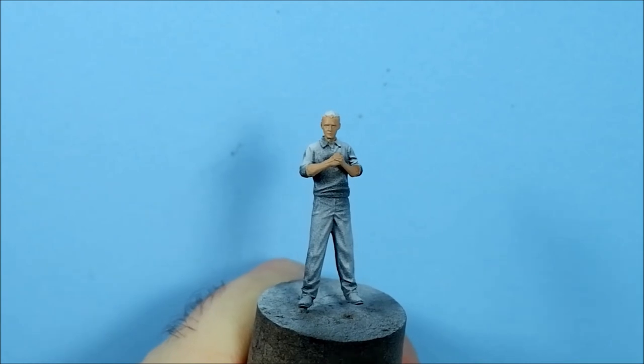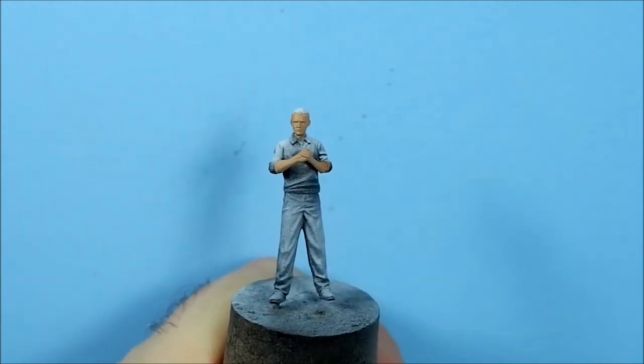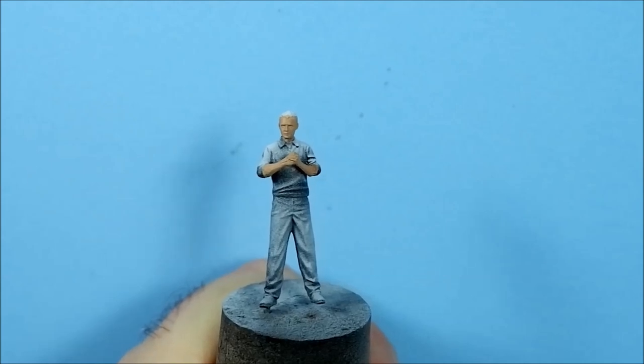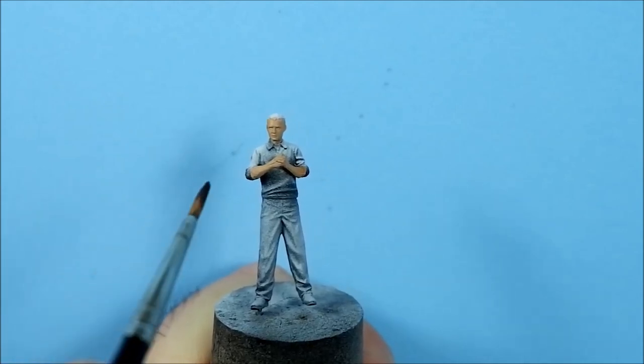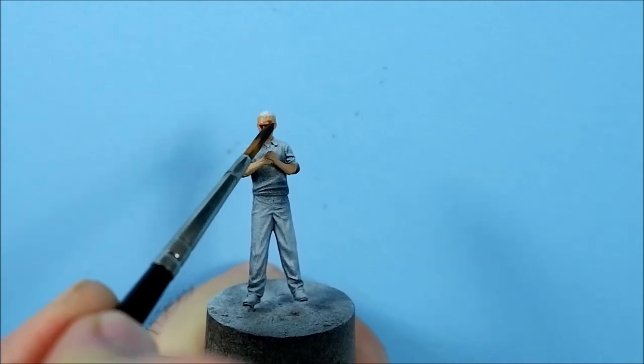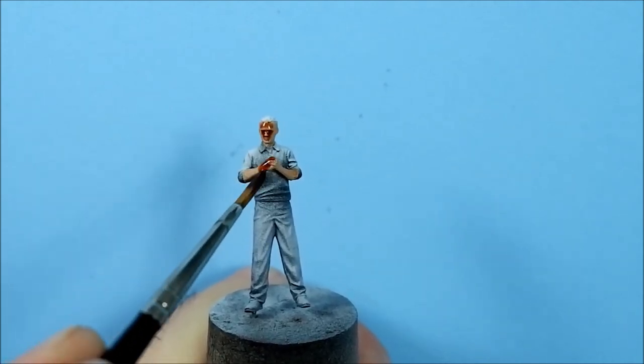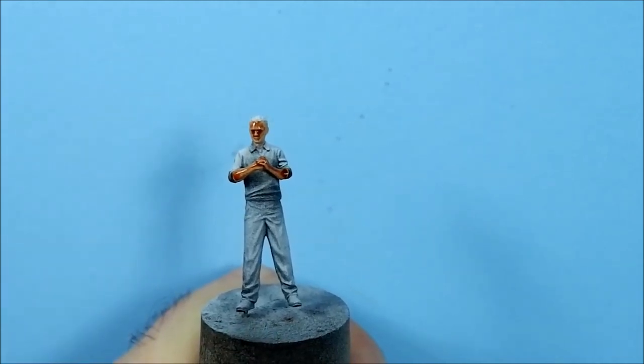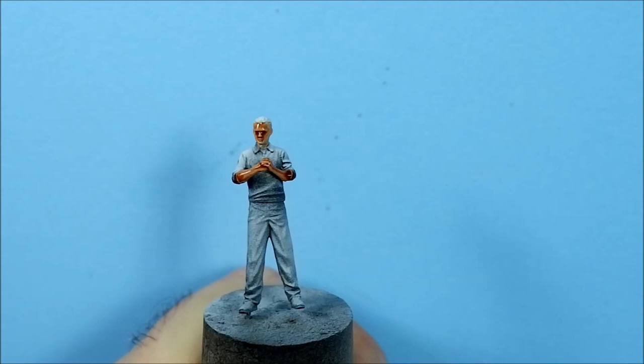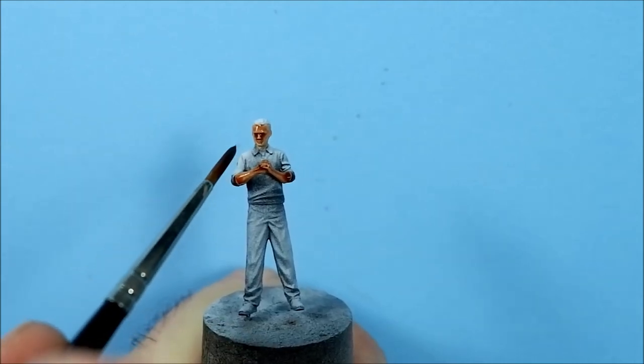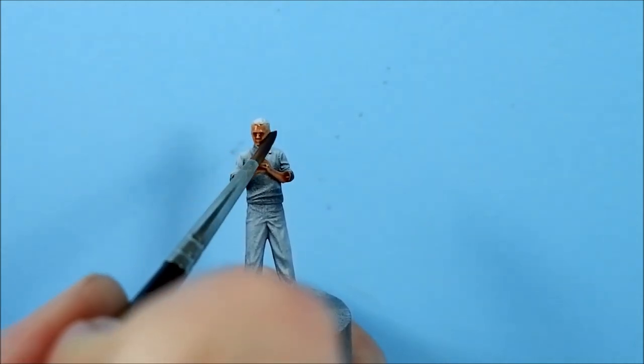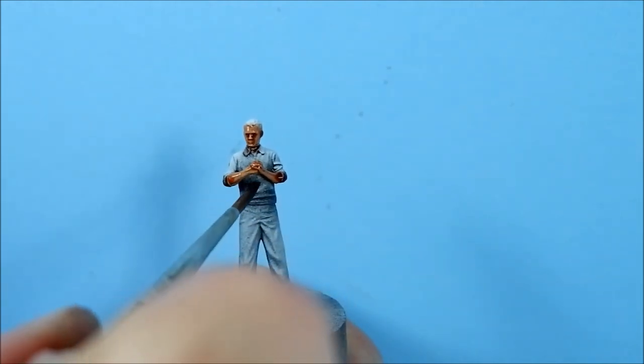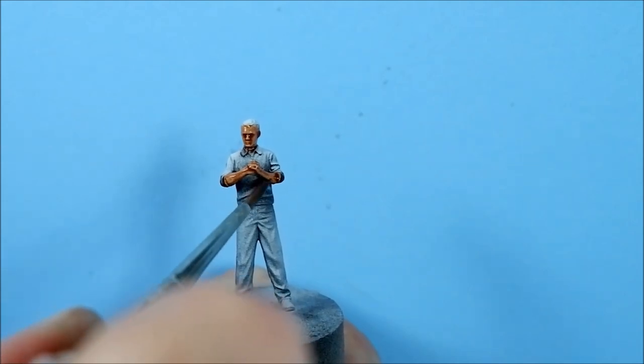Okay so that's two coats of the flesh done. I'm going in with a wash now using Reikland Fleshshade and just cover all the flesh areas really and try and pull it in the deepest areas so it collects in the eye sockets and the lips and the cheekbones. It can go under the chin as well, underneath the arms.